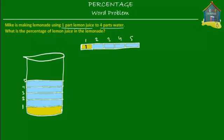What's the fraction of the lemonade that lemon juice represents? The fraction is one out of five, because there are a total of five parts in the lemonade and lemon juice is only one part. So lemon juice represents a fraction of one-fifth of the lemonade.